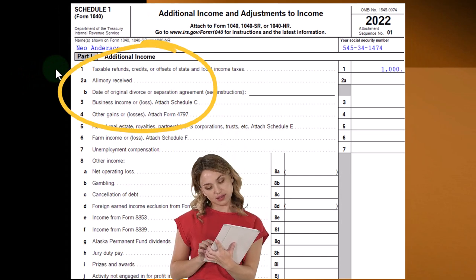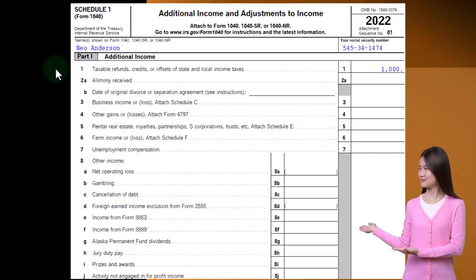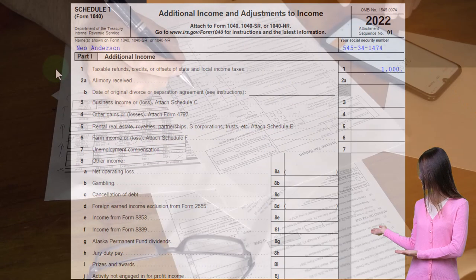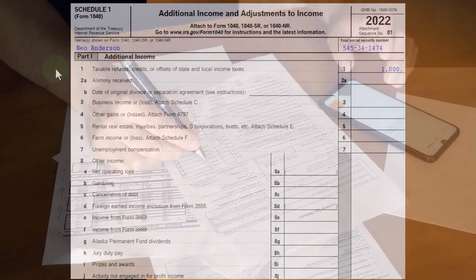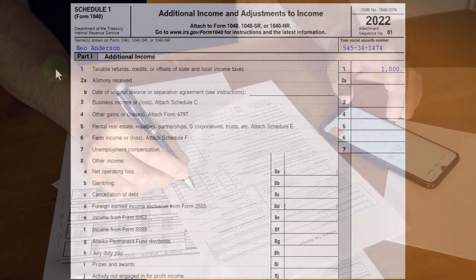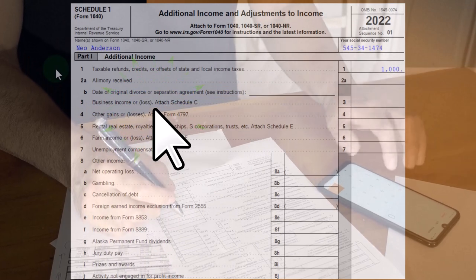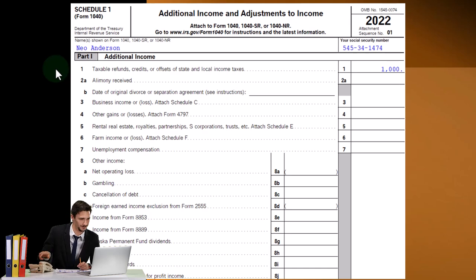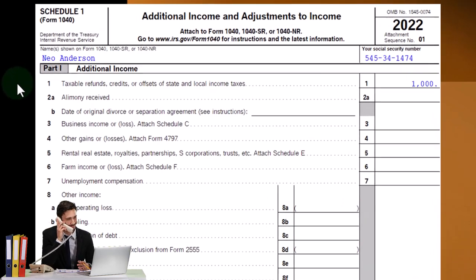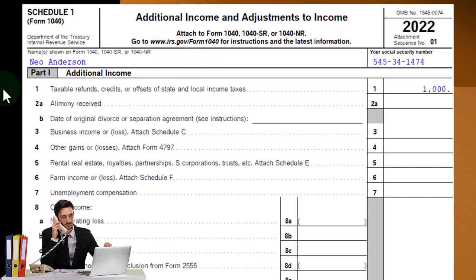The general rule is: if you get a 1099-G saying you got a refund from the state, and the person did not itemize last year, then they likely didn't get any tax benefit from the state taxes. Typically people don't itemize unless they have a home, because mortgage interest and real estate taxes are what push people over to itemizing. If they did not itemize last year, you don't have to include it in income.